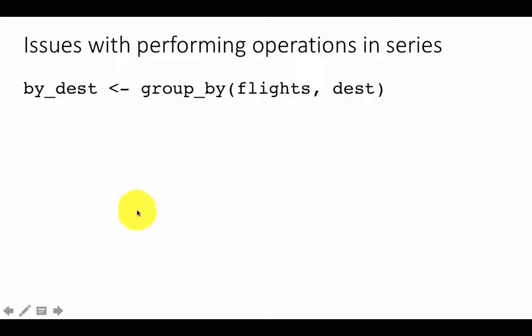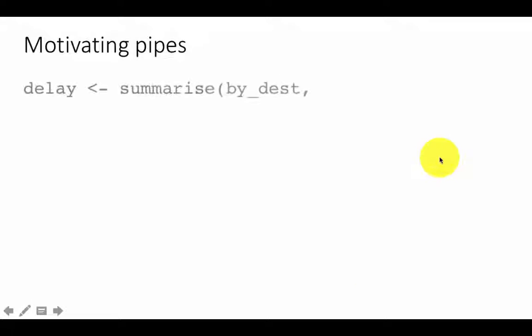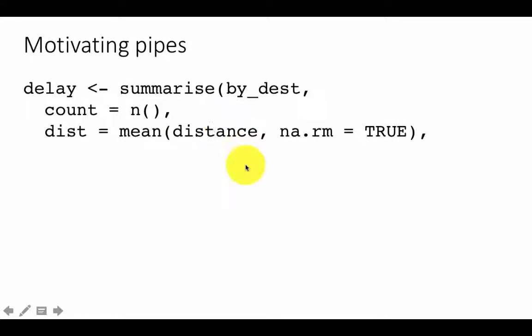Now when you perform several dplyr operations in series, you are usually not going to perform a single operation — you perform one, then from the result do another, and so on. Let us group the flight data by destination this time. All the flights originate from one of the three New York airports, but the destination could be in several places. Grouping by destination tells us there are a total of 105 different destinations.